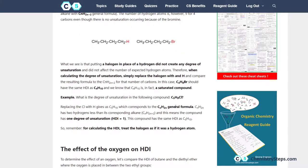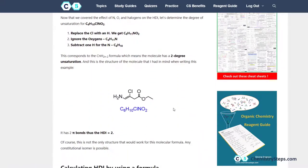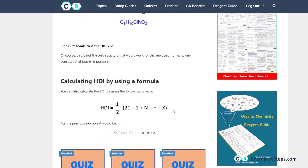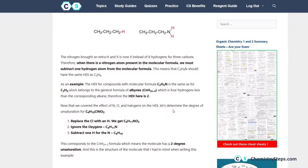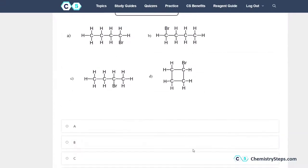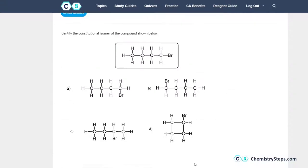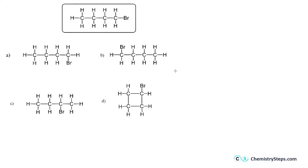This will be very helpful in quickly determining constitutional isomers. Let's check our structure: our compound has no rings and no double bonds, which means it's a saturated compound. We can therefore exclude this option — even though it has four carbon atoms, it has a degree of unsaturation, so it cannot be a constitutional isomer.